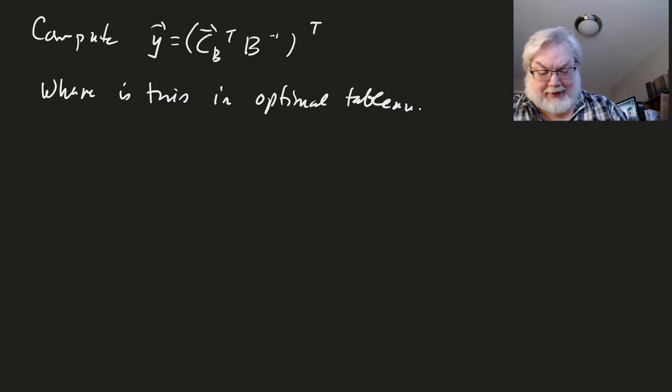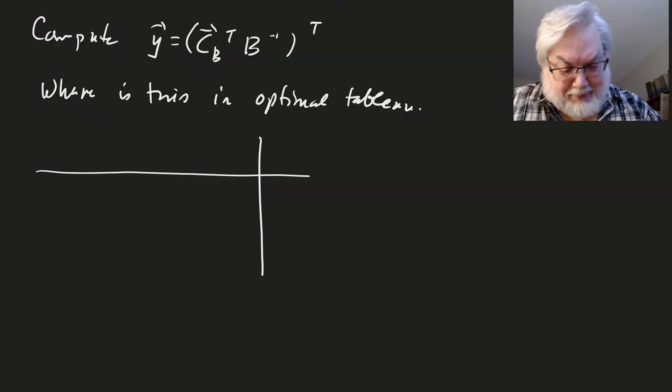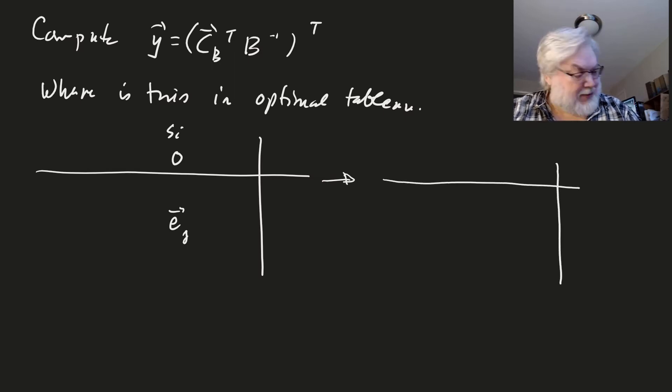So if we take a look at the tableau, and in particular, if we look at a column that corresponds to a slack variable, then the initial column has a zero there, and then it has a column of the identity. Let's say EJ. So when you look to see what this turns into when you're computing the optimal tableau, the EJ turns into the J-th column of B inverse. Right?